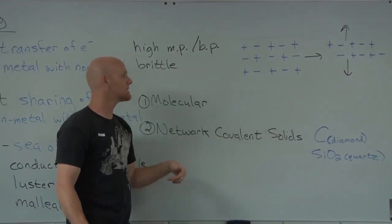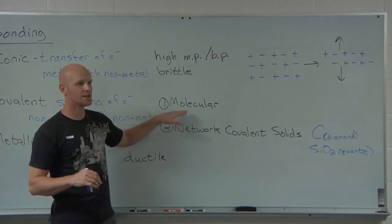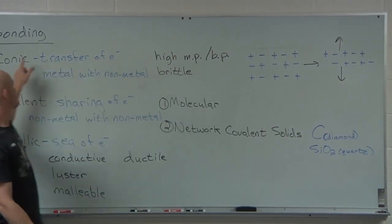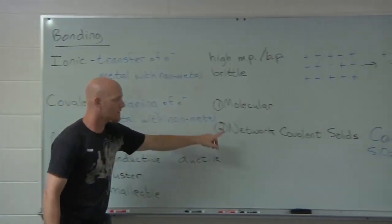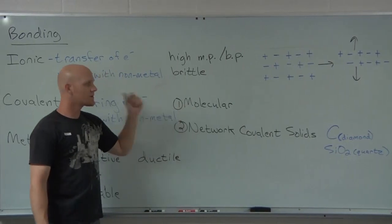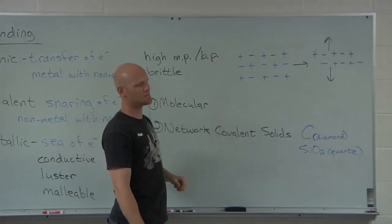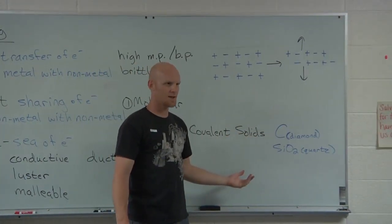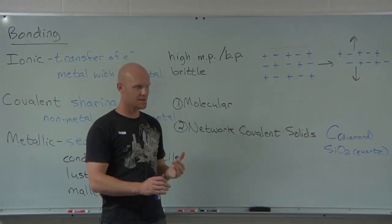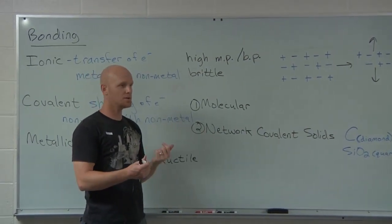Just about any other example of all non-metals is going to be a molecular compound — one that actually forms molecules. Notice: ionic compounds don't form molecules. Network covalent solids don't form molecules. Only molecular compounds form molecules. So if I said 'I've got a diamond molecule,' you'd say there's no such thing. If I said 'I have a sodium chloride molecule,' you'd say there's no such thing.